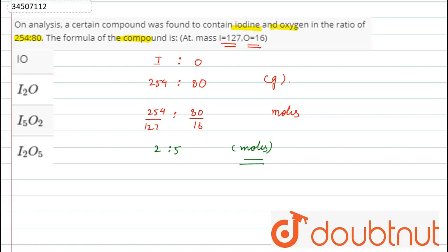So, what is our compound formula? I₂O₅. That is, 2 moles of iodine atoms are combined with 5 moles of oxygen atoms. So, what will your answer be? Option number D. Thank you.